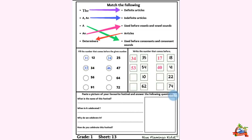What comes before 35? 34 — yes, 34 comes before 35. What number comes before 54? 53 comes before 54. What number comes before 18? 17 — yes, 17 comes before 18. What number comes before 41?